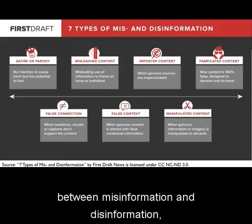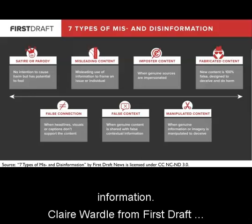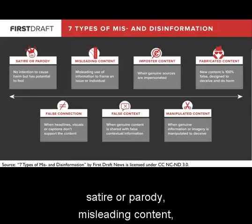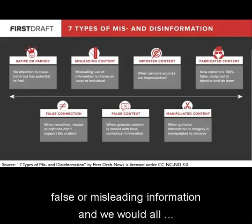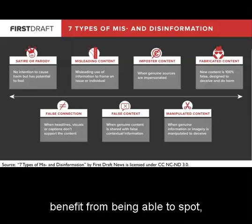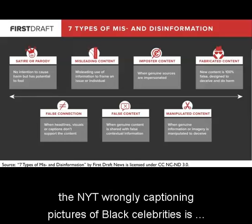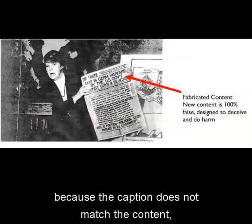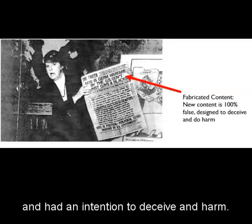Now that we can distinguish between misinformation and disinformation, let's look a bit deeper into this broad spectrum of unreliable information. Claire Wardle from First Draft News has identified seven types of mis- and disinformation: satire or parody, misleading content, imposter content, fabricated content, false connection, false context, and manipulated content. This comprises a spectrum of false or misleading information, and we would all benefit from being able to spot, differentiate, and label the different types. To use our previous examples, the New York Times wrongly captioning pictures of black celebrities is an example of false connection, because the caption does not match the content, while Operation Infection largely distributed fabricated content that was 100% false and had an intention to deceive and harm.